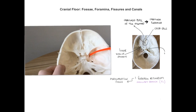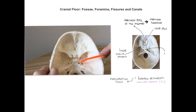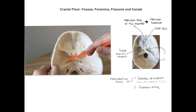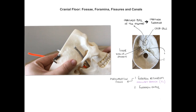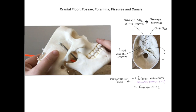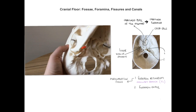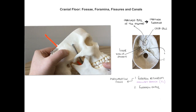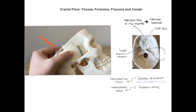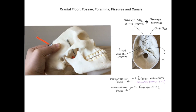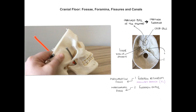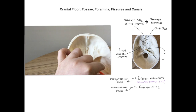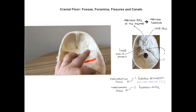Coming back from the foramen rotundum we find the foramen ovale, oval in shape, with one on each side. Passing the pipe cleaner through the foramen ovale leads into the infratemporal fossa — the space just below the temporal bone and medial to the mandible — which contains the pterygoid muscles of mastication. The nerve passing through the foramen ovale is the mandibular branch of the trigeminal nerve.